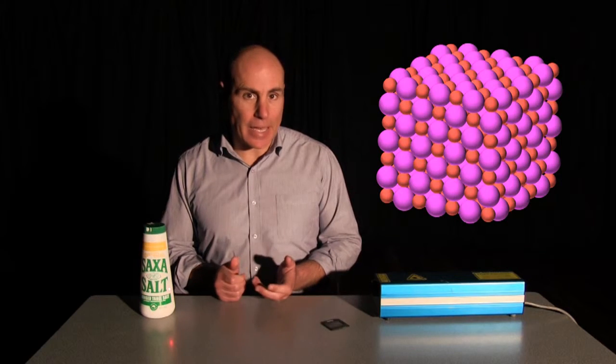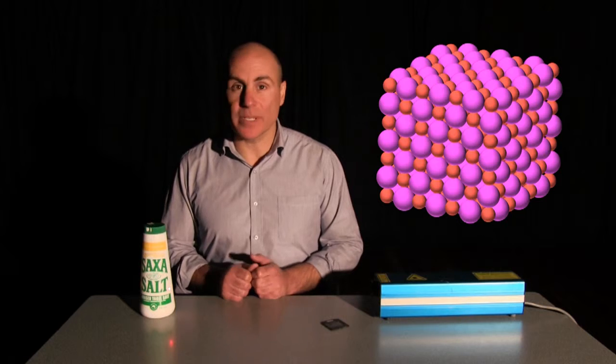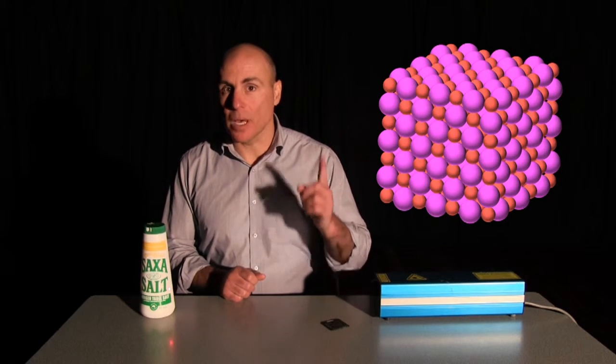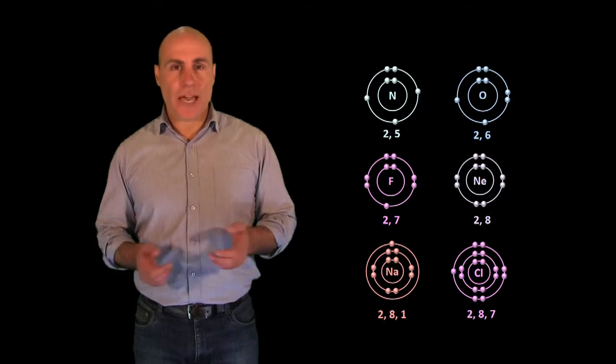The formula NaCl therefore turned out to be simply a ratio of the atoms. For every one Na atom, there was one Cl atom. At first, it wasn't clear how the atoms bonded together.